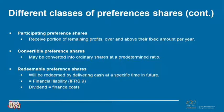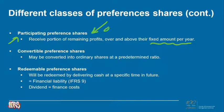Other classes of preference shares include participating, convertible, and redeemable preference shares. A participating preference shareholder is entitled to, over and above the fixed annual preference dividend per year, a portion of the remaining profits declared in the form of the ordinary dividend. So they participate in the ordinary dividend as well, usually with reference to a percentage of the ordinary dividend. When you're a participating preference shareholder, you'll get your fixed annual amount per year as well as a portion of the ordinary dividend.